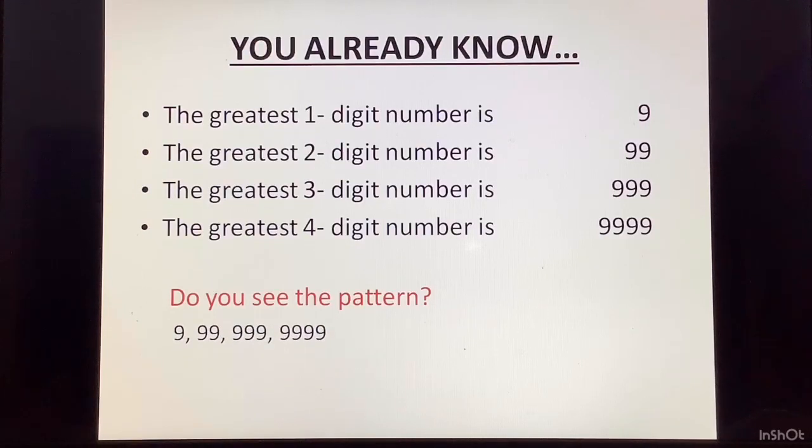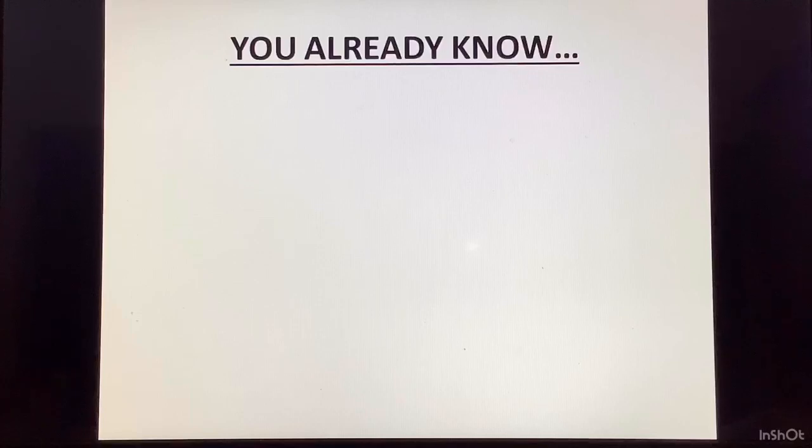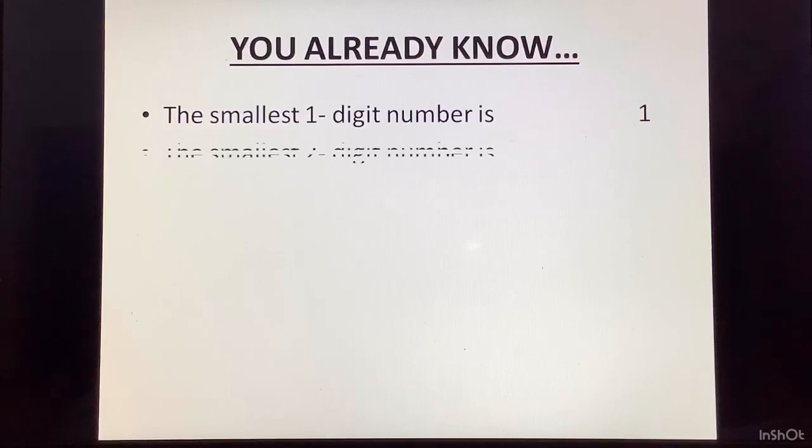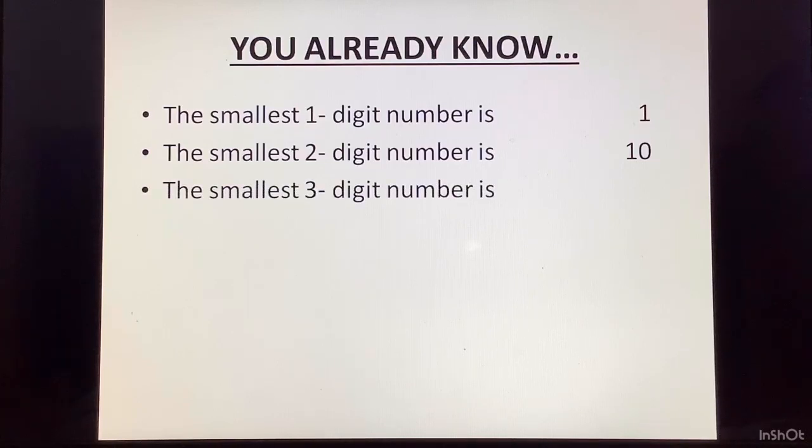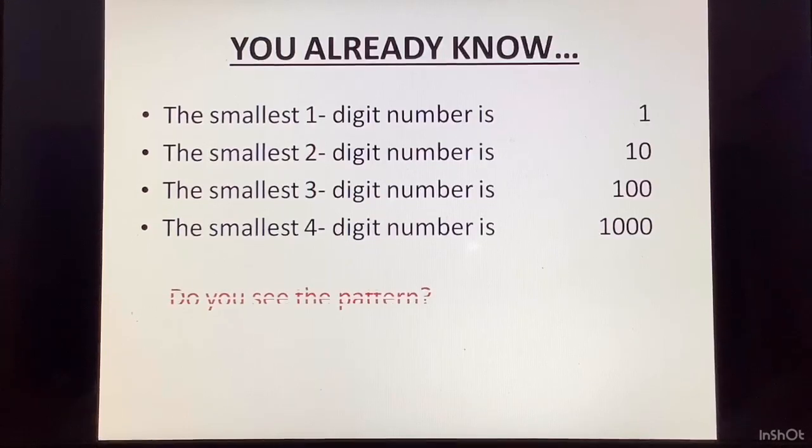Similarly, you also know, the smallest one digit number is 1. The smallest two digit number is 10. The smallest three digit number is 100. The smallest four digit number is 1,000, 1 followed by 3 zeros. Again, do you see a pattern here?